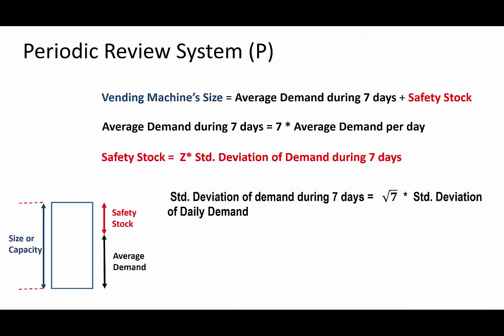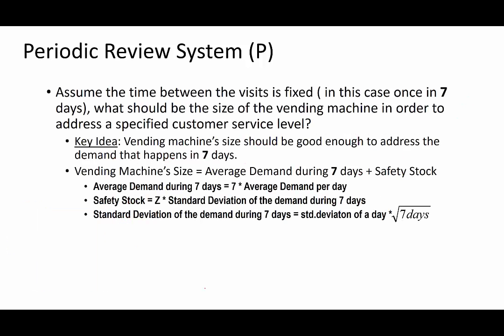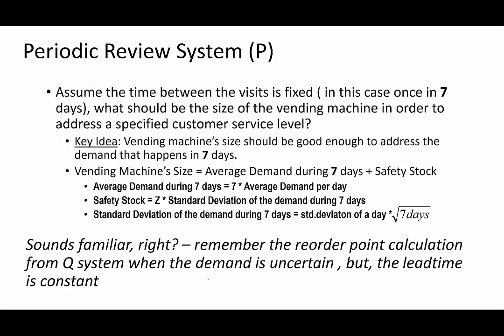We are almost done with the calculations for vending machine size. The vending machine size has two components: the average demand during seven days, and the safety stock. This formula for the vending machine size is exactly the same as the reorder point calculation in the continuous review system — the Q system where demand is uncertain but lead time is constant.